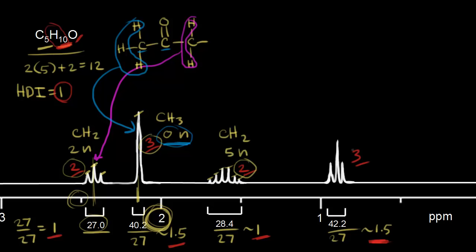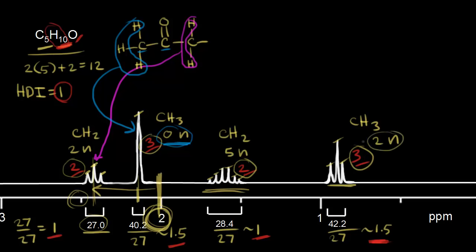The next signal has three protons — a methyl group, CH3. Counting peaks: one, two, three — three minus one equals two neighboring protons. These two signals are both under 2 ppm, so they must be furthest from the carbonyl and not being deshielded as much. The two neighboring protons for the methyl group must be these two CH2 protons.